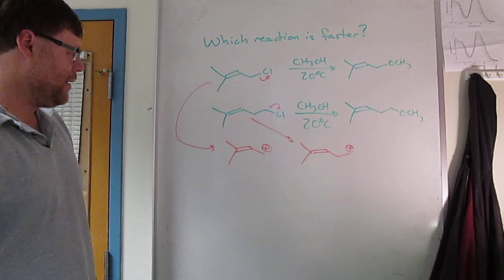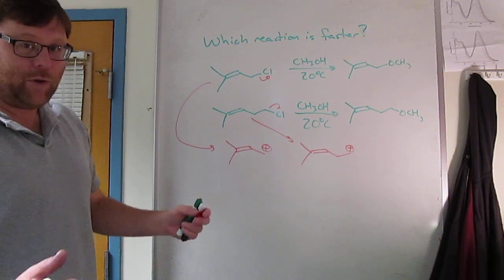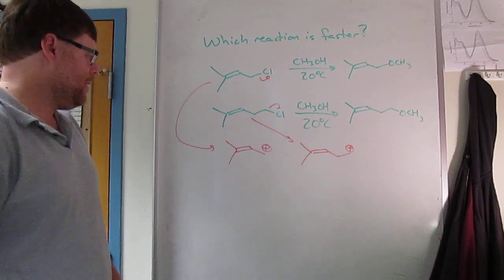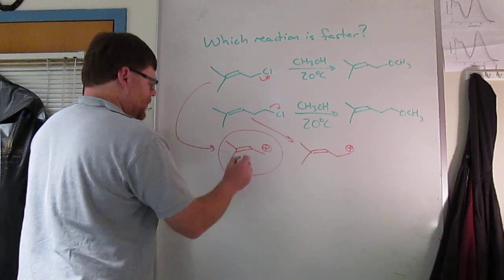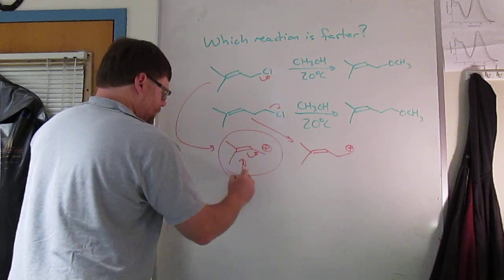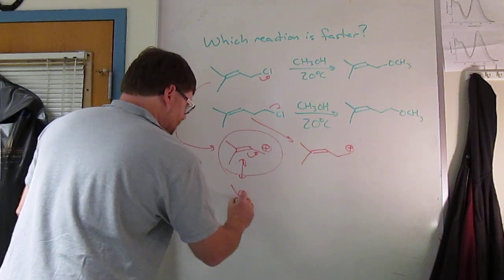It's clearly this one. You can draw a resonance structure - that cation is delocalized. One of the charge structures has the positive charge on the tertiary carbon.